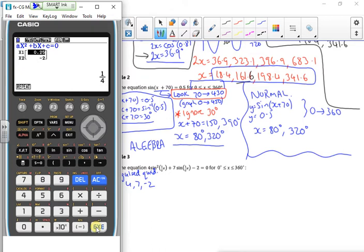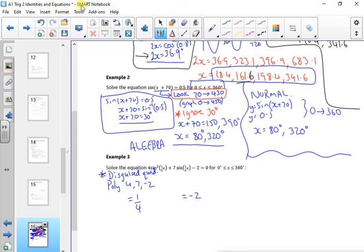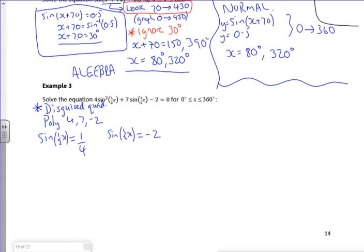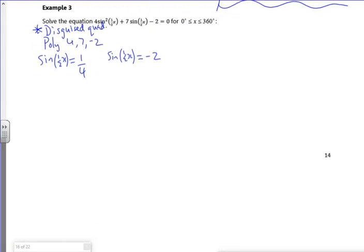From that it gives me a quarter and minus two. If it were just 4x squared plus 7x minus 2, it would be x equals, but this is a disguised quadratic, so it's sine of a half x. In terms of complexity, this one's just gone through the roof because we've got a disguised quadratic and it's also a half x, so I'll be looking half as far.